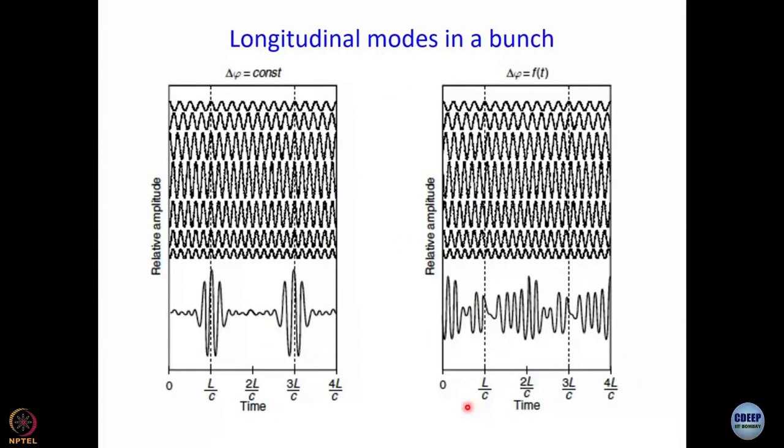Second, to introduce this important parameter quality factor Q, which plays a very important role in producing laser pulses. And also, as we will see later on, the same kind of device is used when you want to amplify a laser. Q factor is something that will come back again and again.